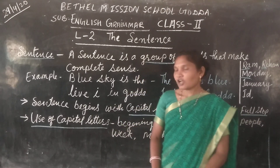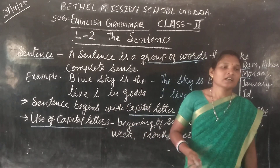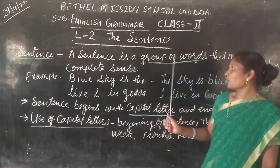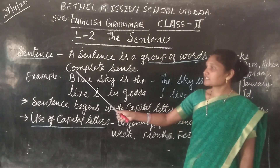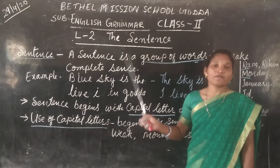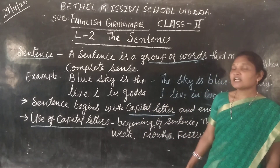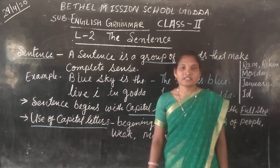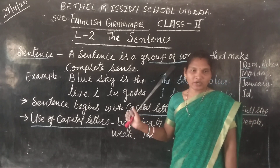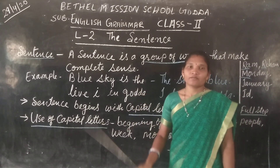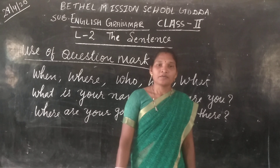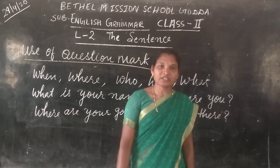So children, now you understood what is a sentence. Now all of you repeat after me: A sentence is a group of words that makes complete sense. And whenever we write a sentence, we begin with a capital letter and end with a full stop. So children, we saw the full use of capital letters.